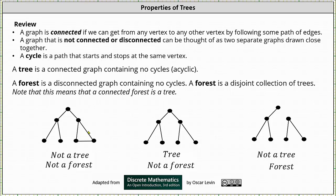And now let's take a look at the three graphs below. Notice how the graph on the left is connected but it does contain a cycle. For example, if we start at this vertex here we can form a path to return back to this vertex. We can go down, right, and back up.